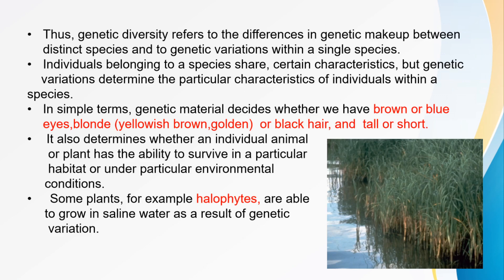In simple terms, genetic material determines whether we have brown or blue eyes. Some humans have brown eyes and some have blue eyes — they are all humans, but with genetic variation. Similarly, some individuals have blonde hair, black hair, or golden hair. Some are tall and some are short. These differences are also determined by genes.